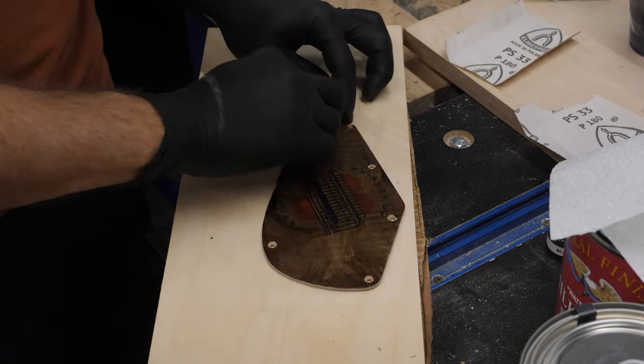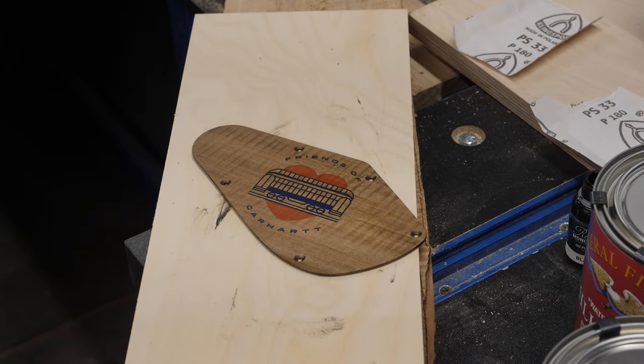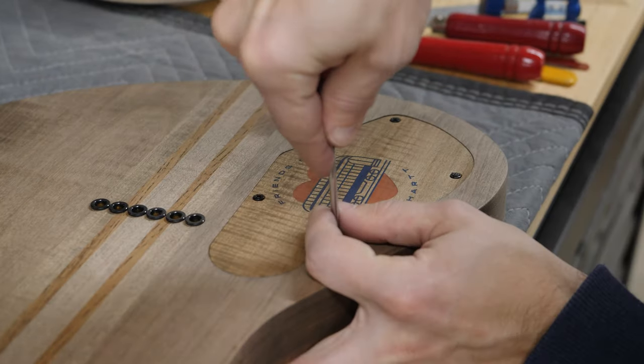Next up, I apply some Rubio Monaco Black to this electronics cover and I get it installed on the guitar. I don't know about y'all, but I think this is looking pretty awesome.